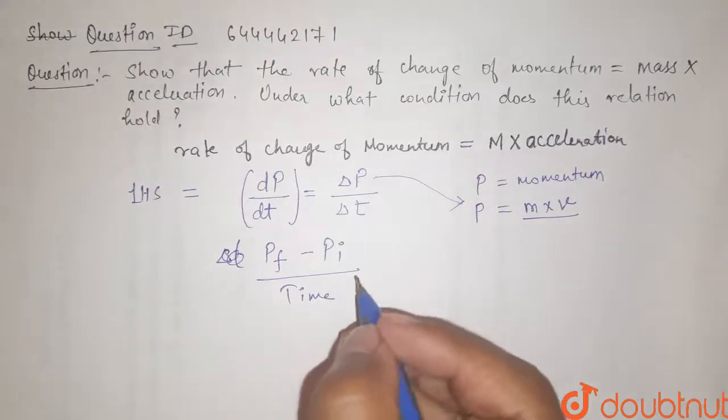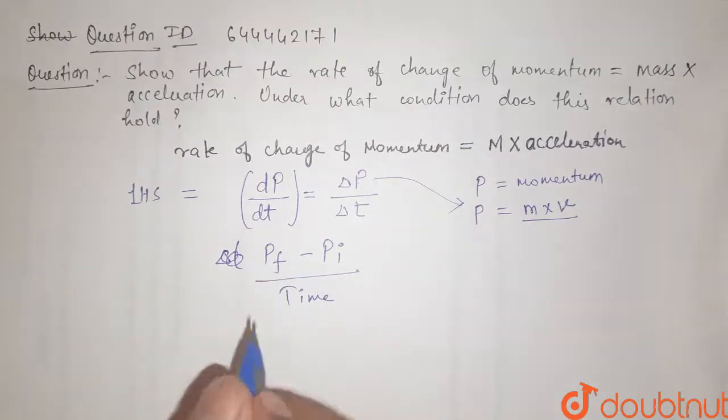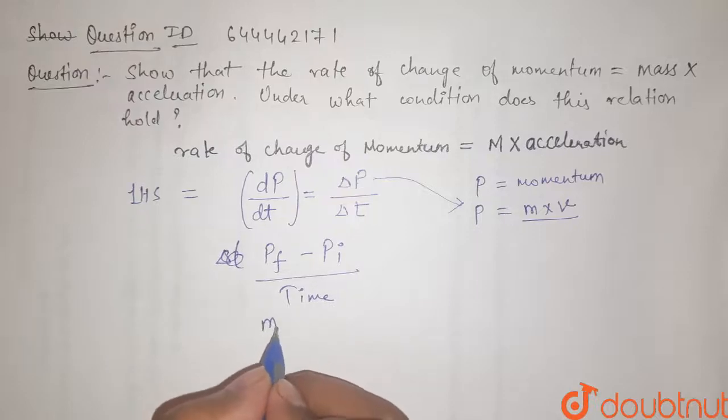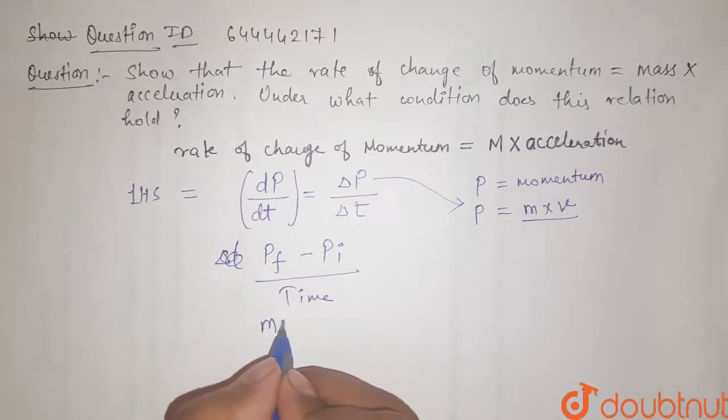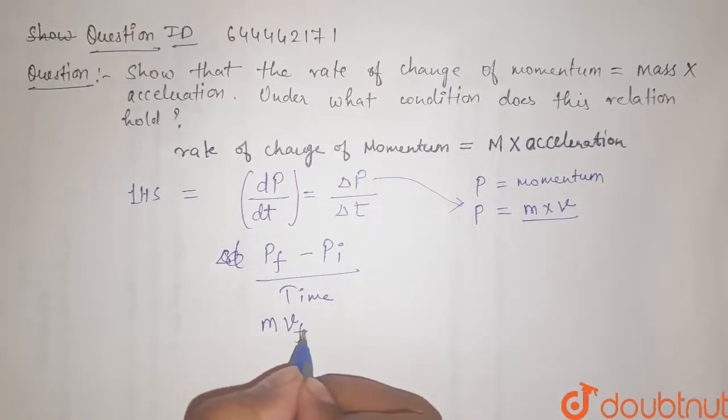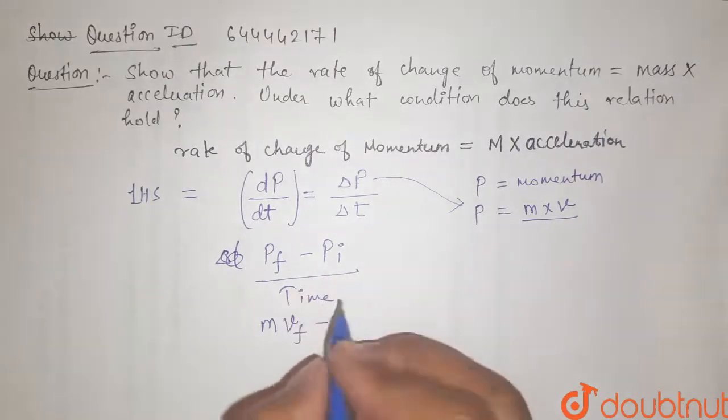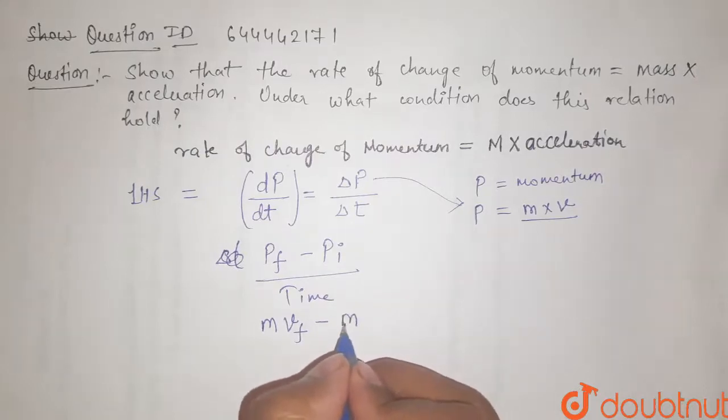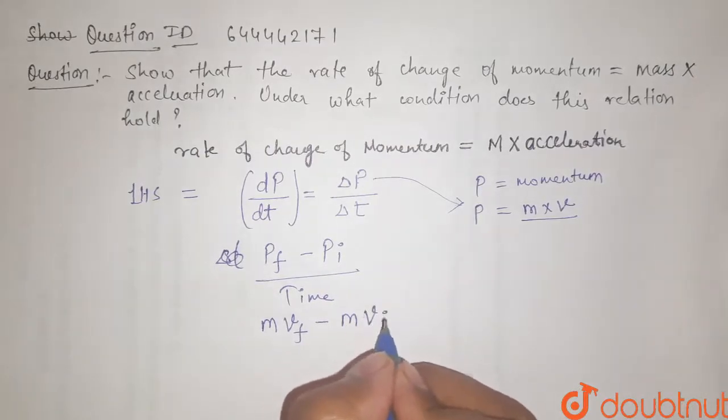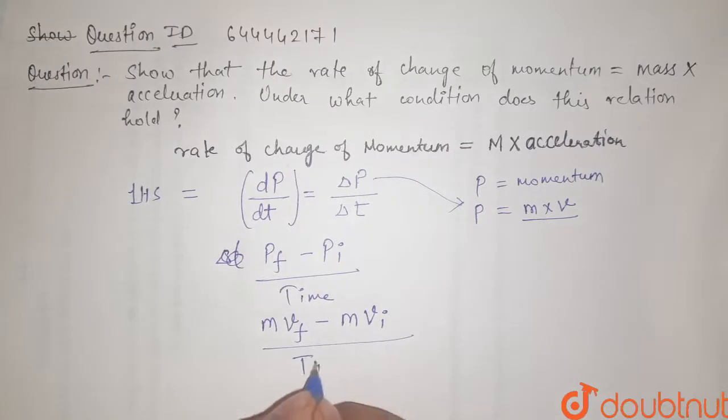So we have the value of p final is mass into its final velocity. Minus p initial, that is initial momentum, is mass into its initial velocity upon time.